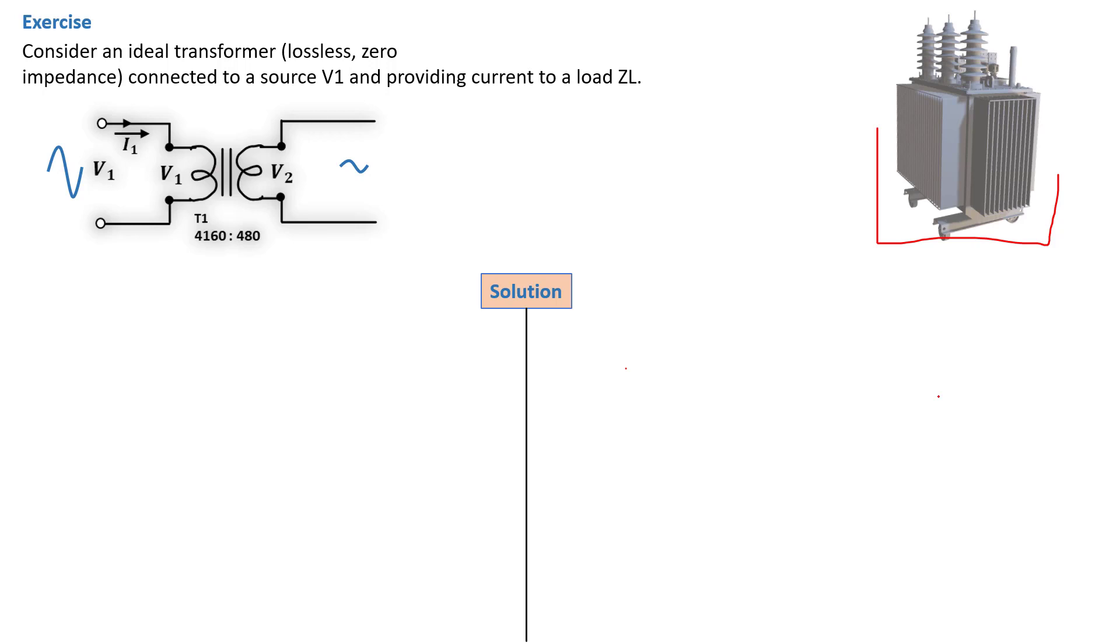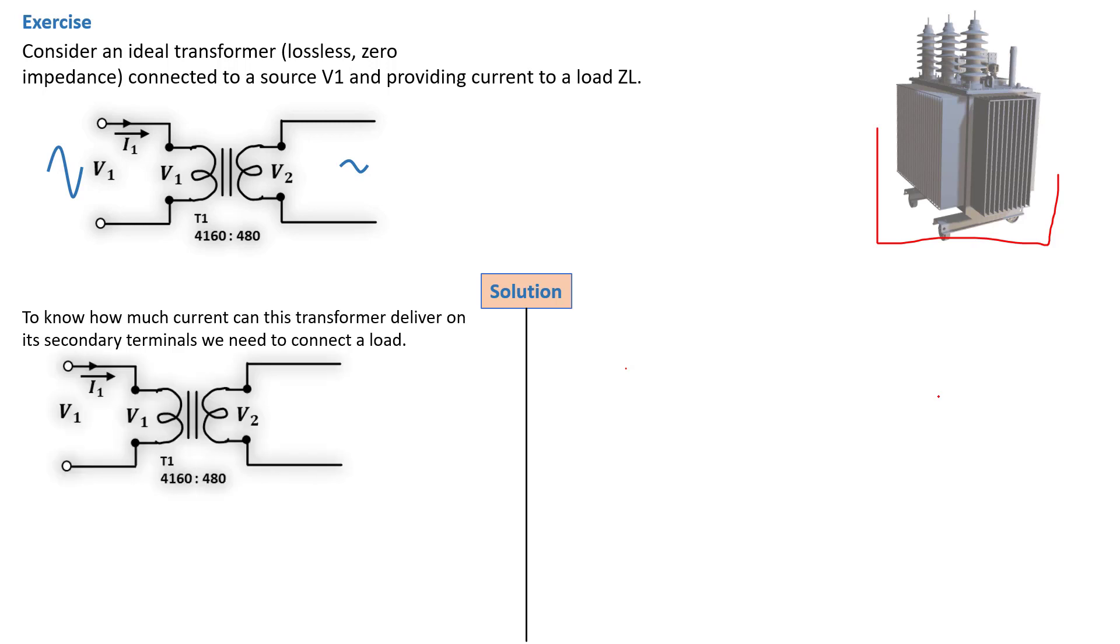The simplest method of finding how much current can be delivered by the transformer is by simply connecting a load on its terminals. If we connect a load on the terminal of the transformer, we're going to see how much current will be flowing from the transformer. We can determine how much current can flow into our load.